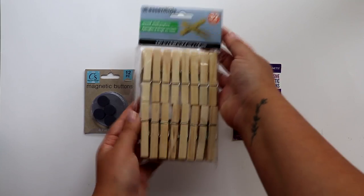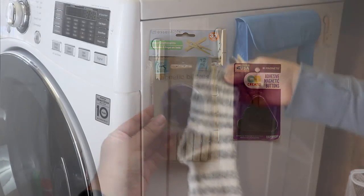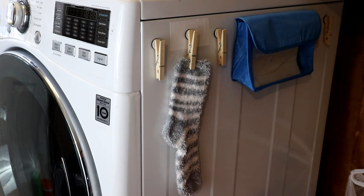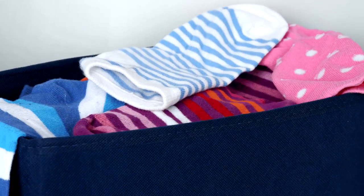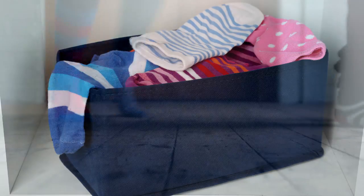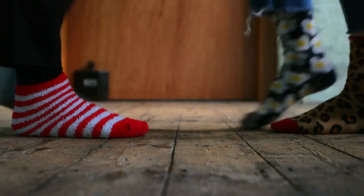Another great use for those craft magnets is to attach them to the backs of clothespins. Then, when you encounter a wayward sock, you can hang it on the side of your washer or dryer until its mate is found. But why is it that sometimes we never do find its mate? Where on earth do they all go? Are they all somewhere having a party?